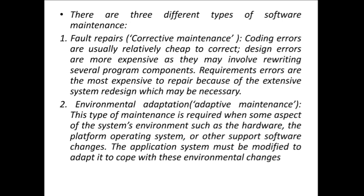There are three different types of software maintenance. The first is fault repairs, also called corrective maintenance — for example, correcting coding errors. Coding errors are relatively cheap to correct, but design errors are more expensive because they may involve rewriting several program components. Requirements errors are the most expensive because requirements is the starting phase — if you make mistakes in the first phase, you have to repeat all other steps.